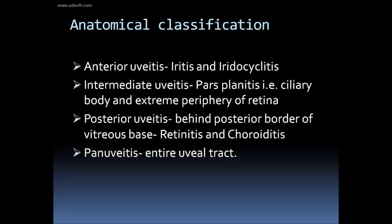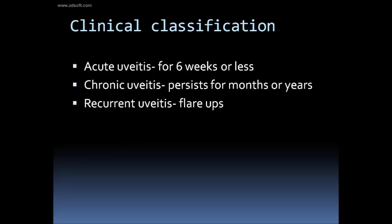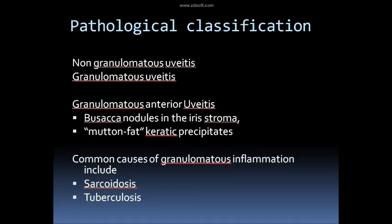Posterior uveitis includes retinitis and choroiditis, whereas pan-uveitis includes inflammation of the entire uveal tract. It can also be classified into acute uveitis, where inflammation lasts six weeks or less, and chronic uveitis, which persists for months or years. A very interesting feature of uveitis is its tendency for frequent flare-ups — that is, recurrent uveitis.